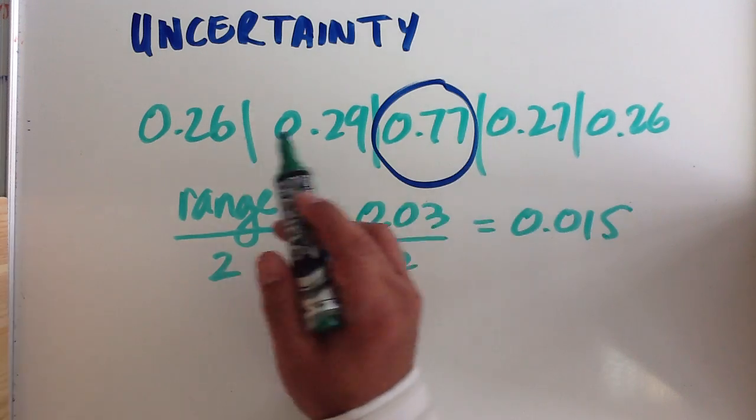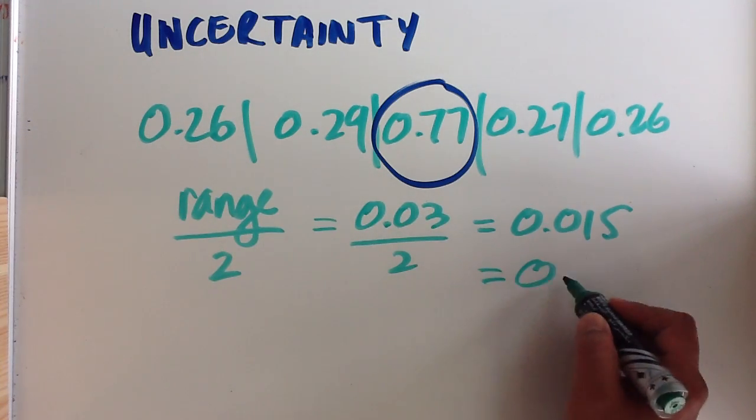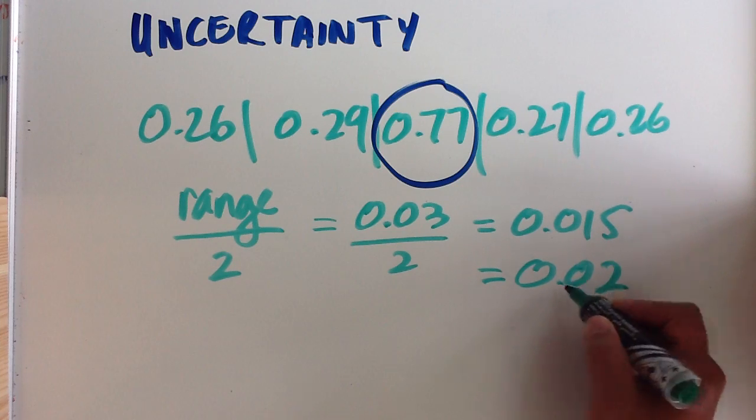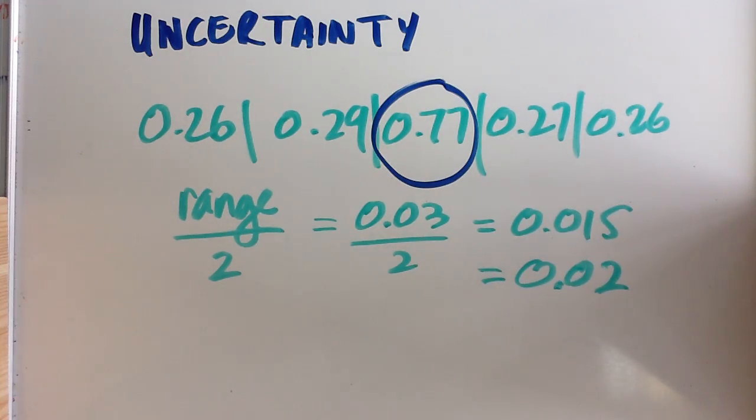Because we are working in the same number of sig fig, we can round that off to 0.02 as your uncertainty value. So it has the same sig fig as your data set.